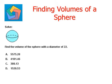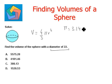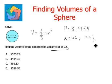Let's look at the next question. Solve: find the volume of a sphere with a diameter of 22. We use the formula V = 4/3 π r³, where π = 3.14159. We are given the diameter as 22, so radius is half of the diameter: half times 22 equals 11.